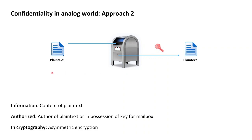If Alice wants to send Bob a confidential piece of plaintext, she takes that plaintext, walks up to Bob's mailbox, and throws the plaintext into the mailbox. As of this point, the plaintext is confidential. If Bob now wants to retrieve the plaintext, he takes his private key of the mailbox, walks up to the mailbox, opens it with his private key, and retrieves the plaintext.